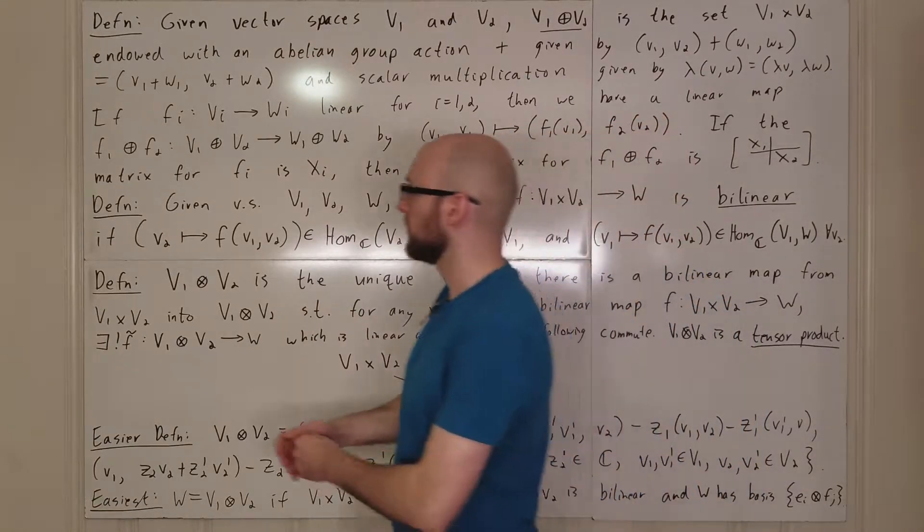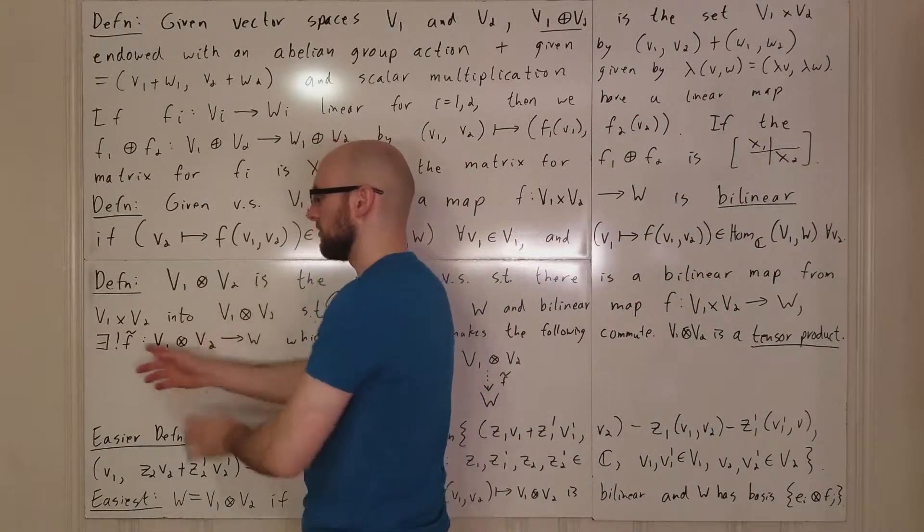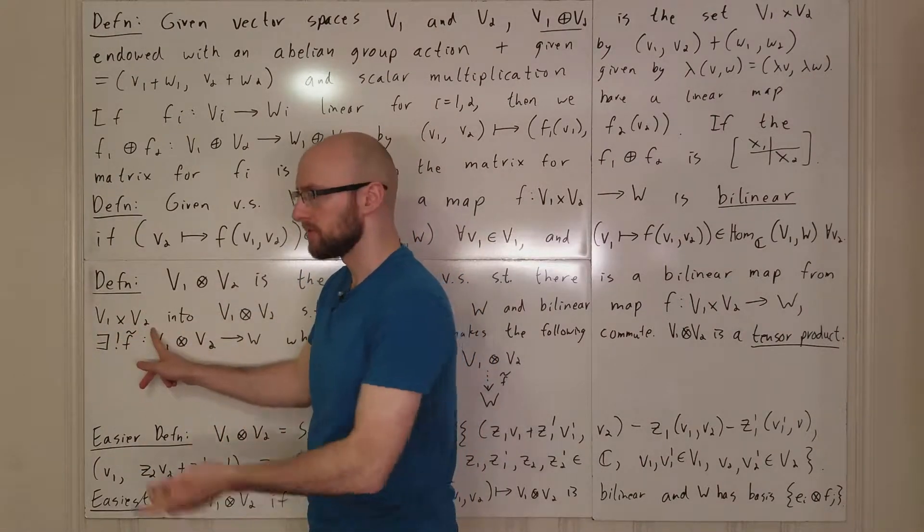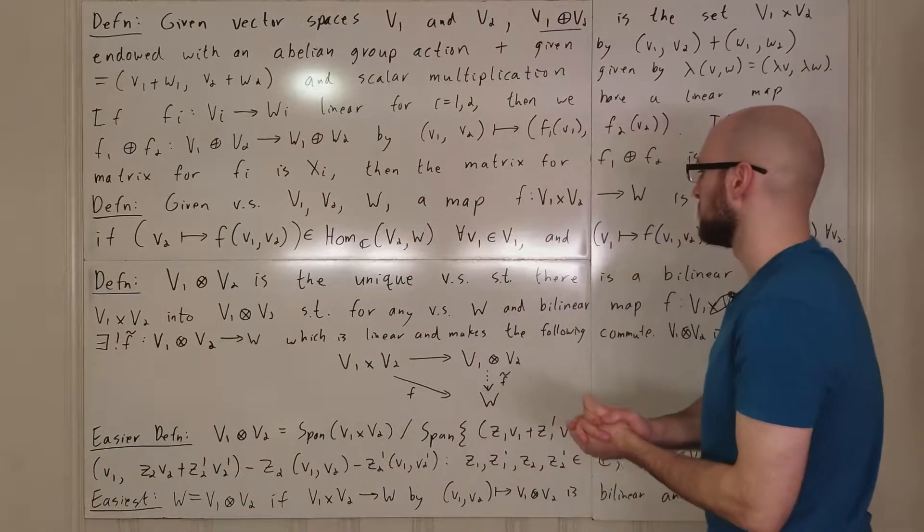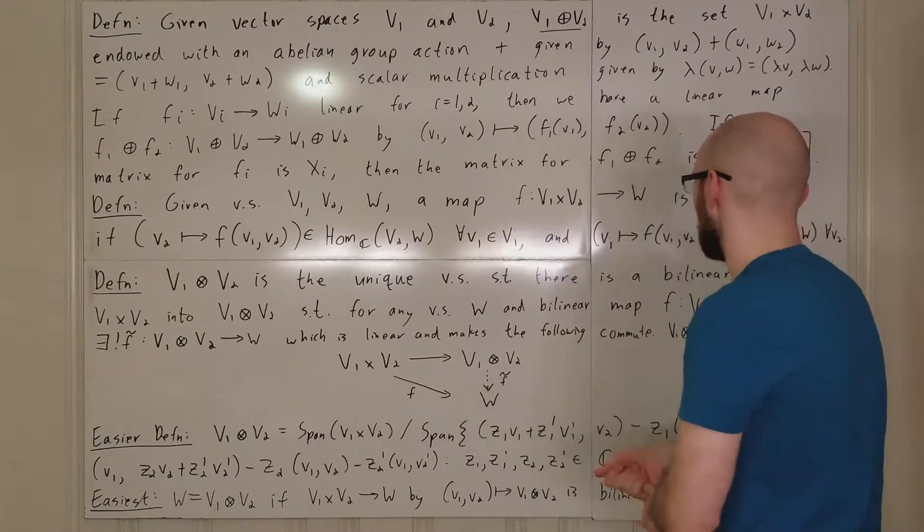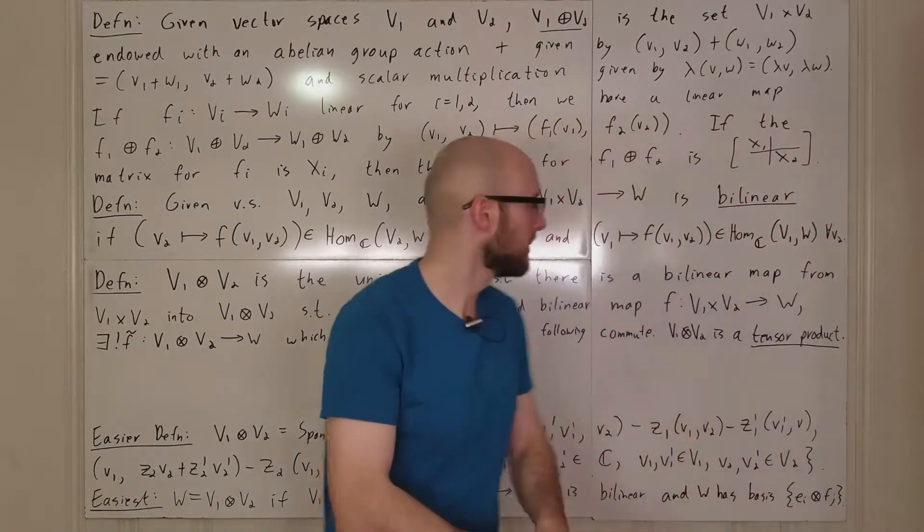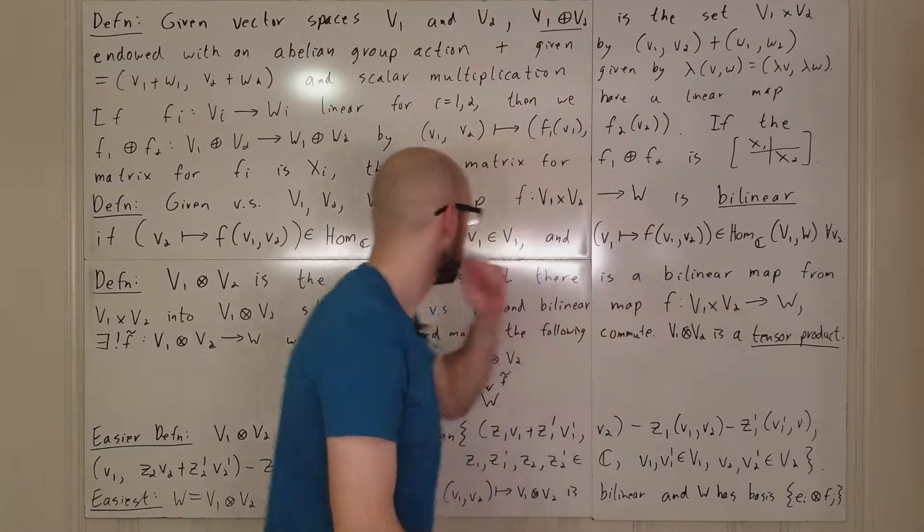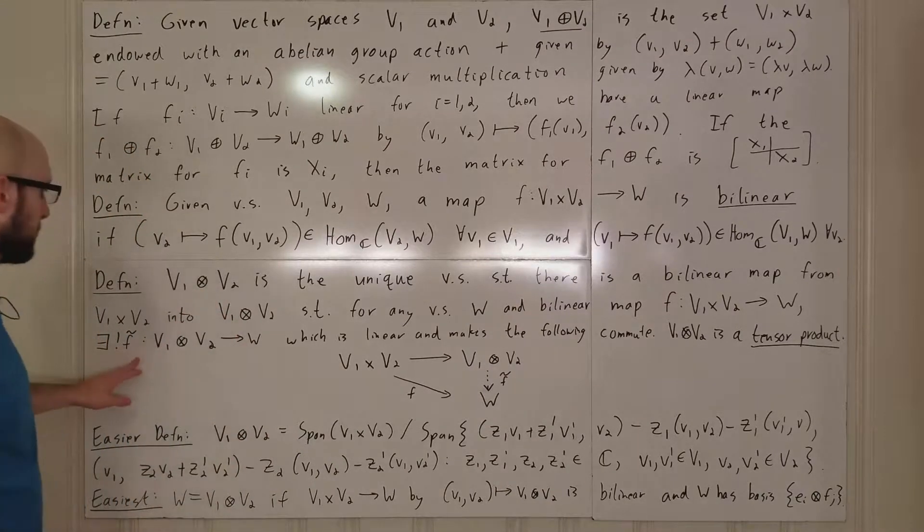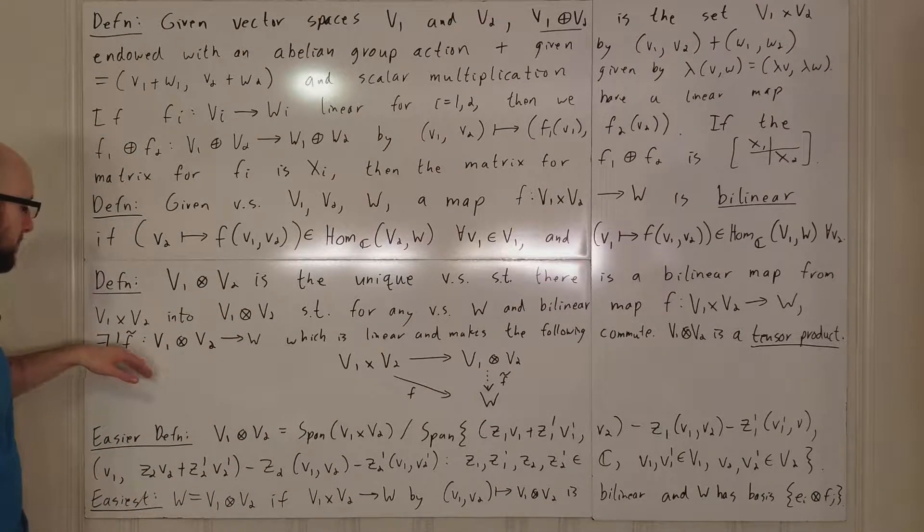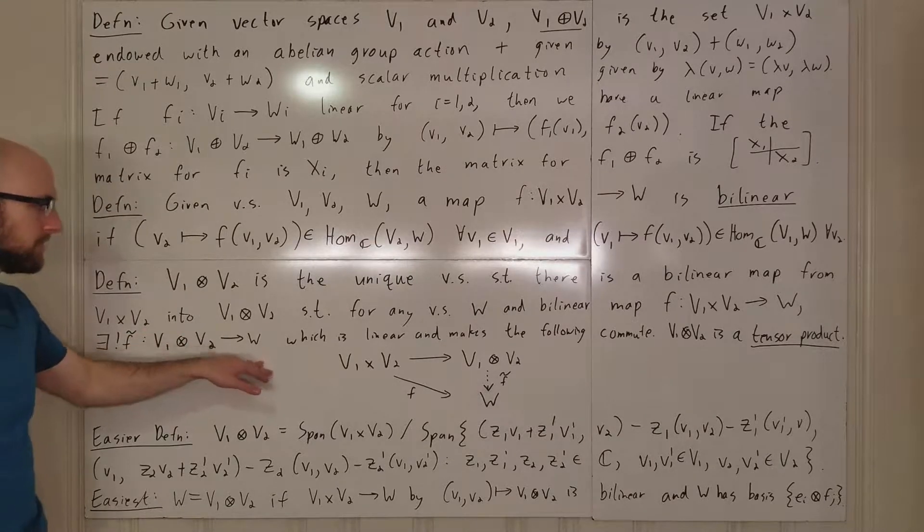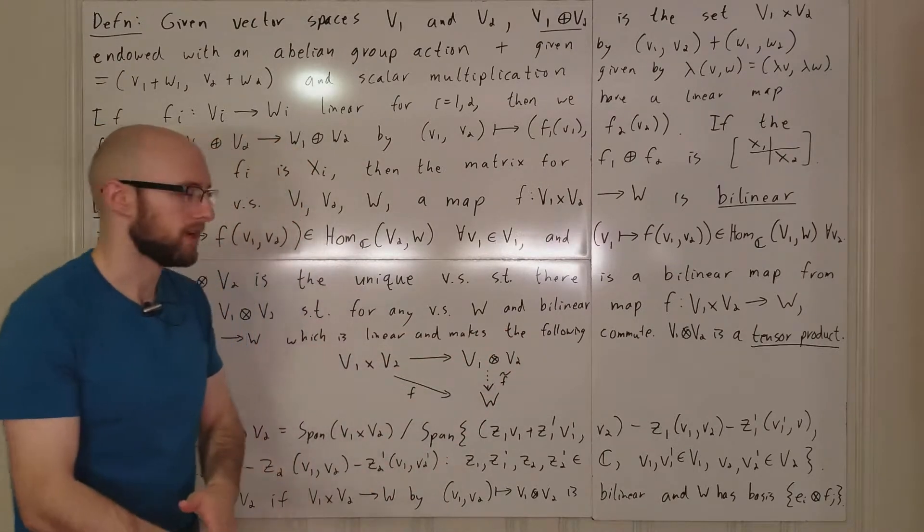and it goes from this direct product into whatever this thing is. So if you fix V1, this map, fixing V1, is going to be linear in the V2 variable, and fixing V2, it's going to be linear in the V1 variable. And it's such that if you take any vector space W and any bilinear map F that goes from V1 cross V2 into W, then you get a unique map F tilde from this tensor product to W,